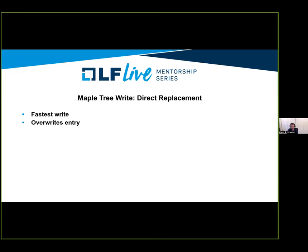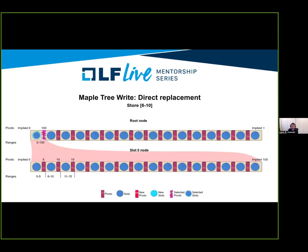The first write type is direct replacement — the fastest, it simply overwrites the entry. Looking at an example tree: when storing 6 to 10, we walk the tree down to the first leaf node because 6 falls within 0 to 100, find the 6 to 10 range, and realize this is a direct replacement. What's nice about direct replacements is that you don't need a new node — it's RCU-safe to just replace the entry. We put the new entry into the slot and we're done.